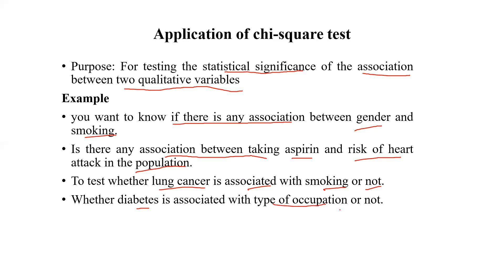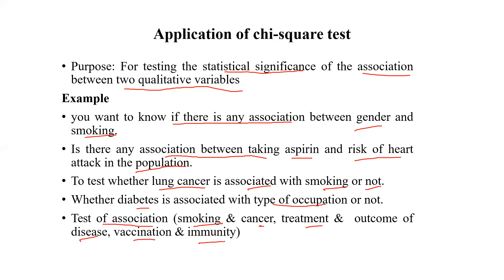And if we want to test the association, smoking and cancer, treatment and outcome of disease, and vaccination and immunity. If such kind of categorical data are available, we can apply the chi-square test.